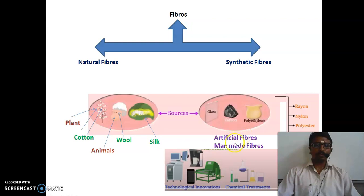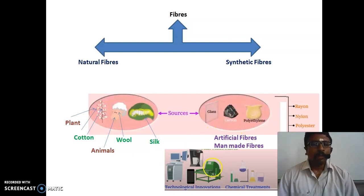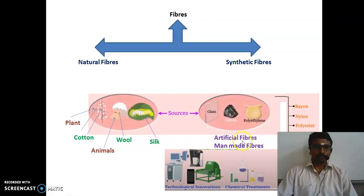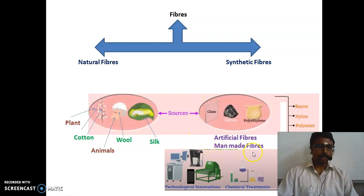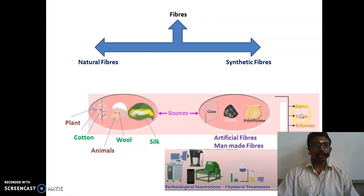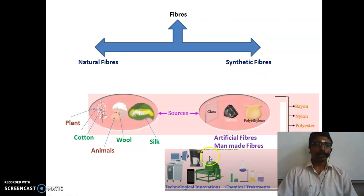Artificial fibers are man-made fibers. The raw material sources include polythene, carbon, and glass. Examples of synthetic fibers include rayon, nylon, polyester, and acrylic. These are the various examples of synthetic fibers.